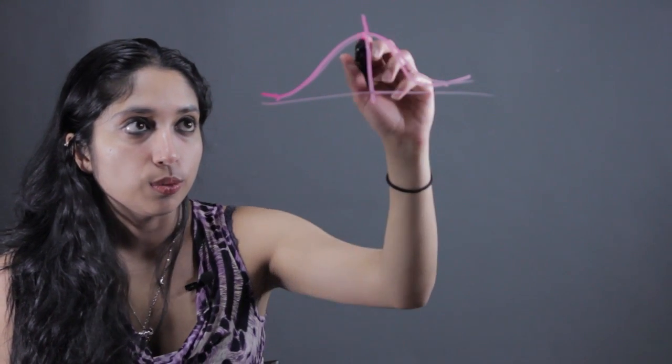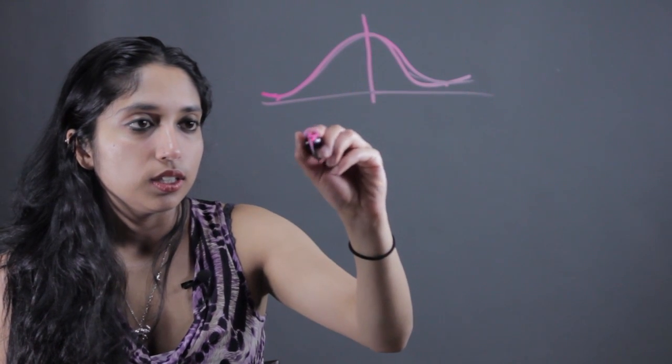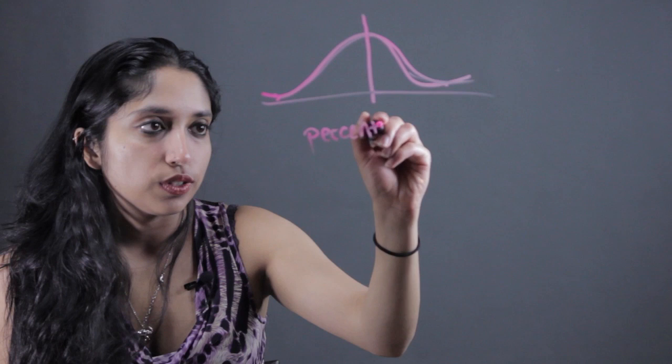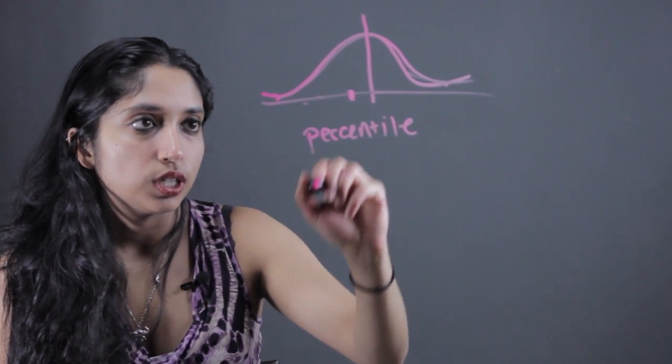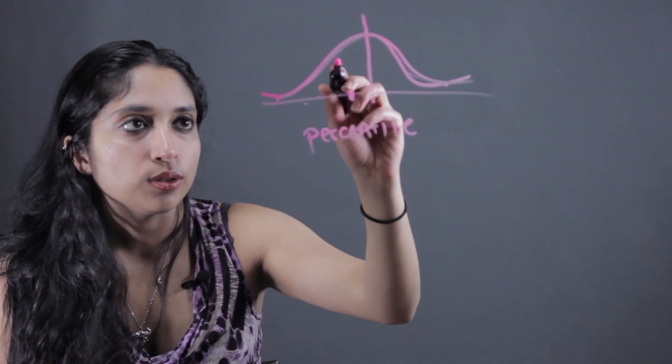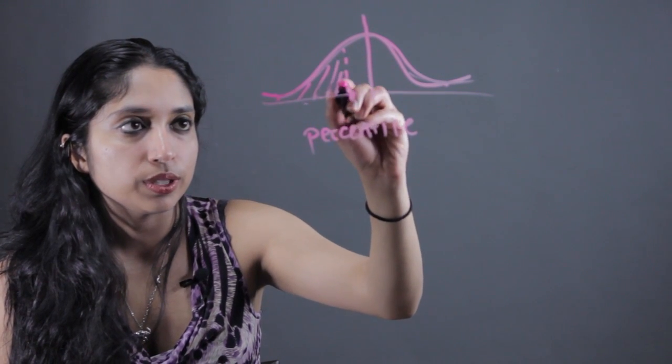So the first thing you're going to want to do when you're finding a percentile, the definition for that is the value on this graph for which every other value below it falls within a certain percentage.